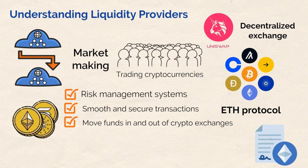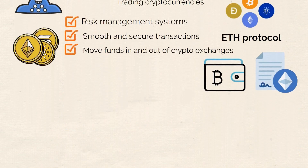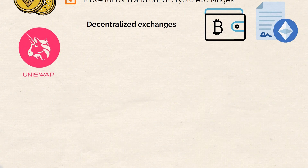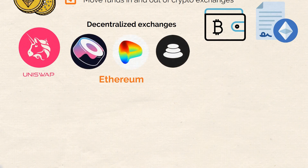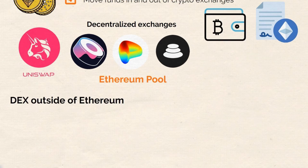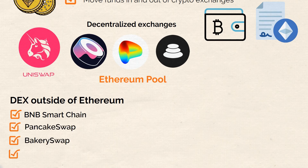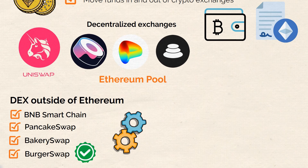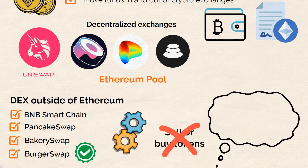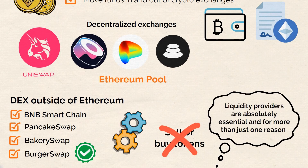Similarly to Uniswap, other decentralized exchanges such as SushiSwap, Curve, and Balancer also utilize liquidity pools on Ethereum. There are also decentralized exchanges outside of Ethereum — on the BNB Smart Chain, PancakeSwap, BakerySwap, and BurgerSwap are popular decentralized exchanges that employ their own liquidity pools. If there are no liquidity providers, a decentralized exchange won't function properly, and people won't be able to sell or buy tokens as they wish. Liquidity providers are absolutely essential, and for more than just one reason.